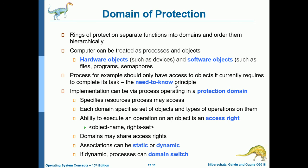Next is the domain of protection. Rings of protection separate functions into domains and order them hierarchically. A computer can be treated as processes and objects — hardware objects such as devices, and software objects such as files, programs, and semaphores. A process should only have access to the objects it currently requires to complete its tasks — this is the need-to-know principle. It does not need to know about other resources it doesn't need at that time.